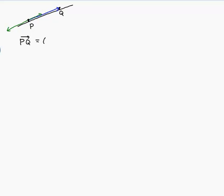PQ is terminal point minus initial point, so Q minus P: (-1,0,4) minus (3,2,6), which gives us -1 minus 3 is -4, 0 minus 2 is -2, and 4 minus 6 is -2. So PQ = (-4, -2, -2).